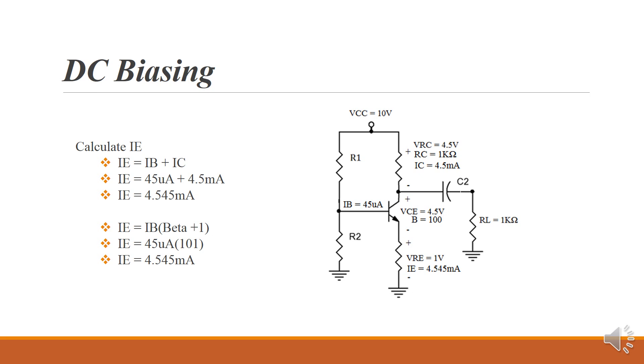Now with IB, we can calculate IE, the current in the emitter. Kirchhoff says that all current flowing into and out of a node has to algebraically add up to zero. So we know that IB and IC added together must be IE, or current in the emitter.